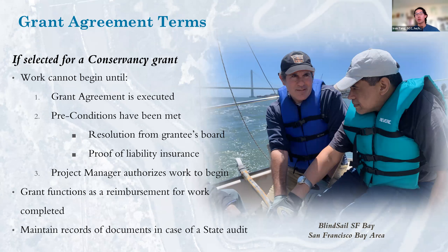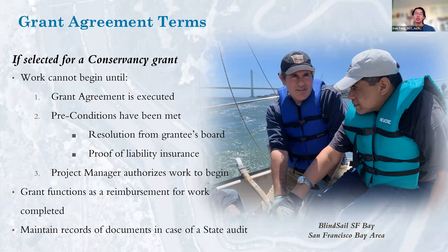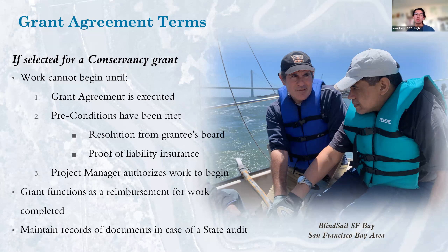Once the Conservancy approves grants at a public meeting, staff will prepare grant agreements setting forth the terms and conditions. The grantee must sign the agreement and comply with all conditions to receive funds. Expenses incurred before the grant agreement is executed cannot be billed to the grant. The Conservancy reimburses grantees for expenses after they are incurred, meaning grantees will need to cover costs between incurring them and receiving reimbursement. In some circumstances, grantees can receive funding in advance.